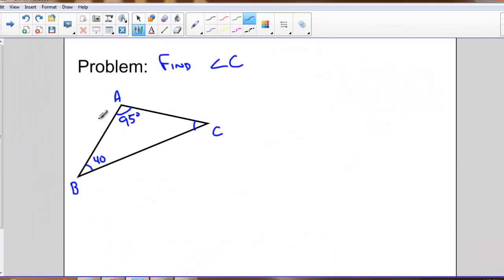So let's try a problem. Here in triangle ABC, I know the angle measurement for angle A, I know the angle measurement for angle B, I want to find angle C. So we know in a triangle, angle A plus angle B plus angle C should equal 180 degrees.